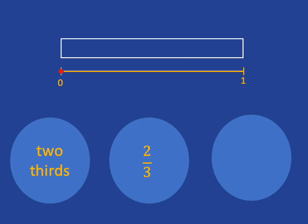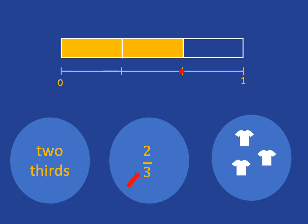So two thirds will be a very similar story. The three tells us we need to cut the chocolate bar up into three pieces, or the length between 0 and 1 up into three pieces. In this case, we've got two in the numerator, so we need to take one, two of those pieces to make two thirds. Or on the number line, we need to travel one, two of those lengths to make two thirds. And in terms of our collection, if two of the t-shirts are yellow, we can say two out of the three — or two thirds — of the collection are yellow.